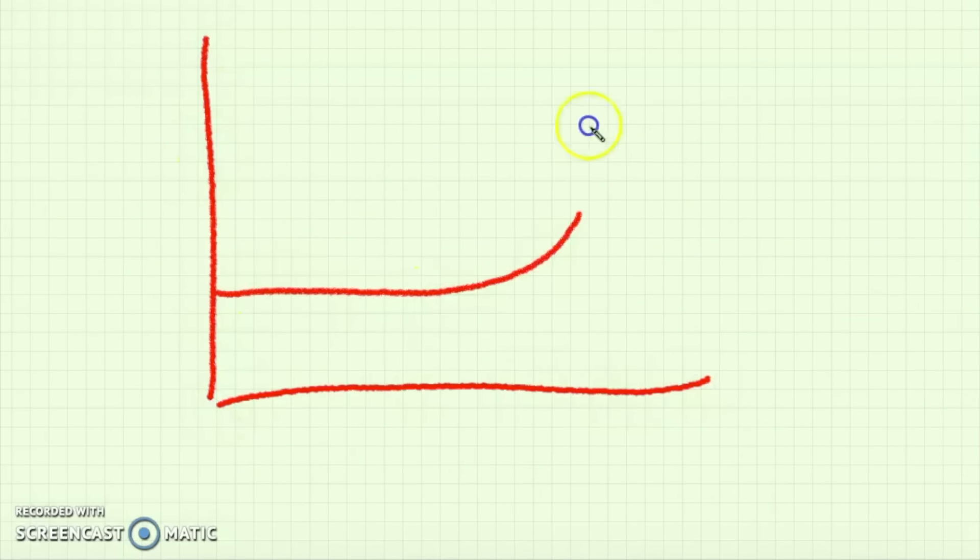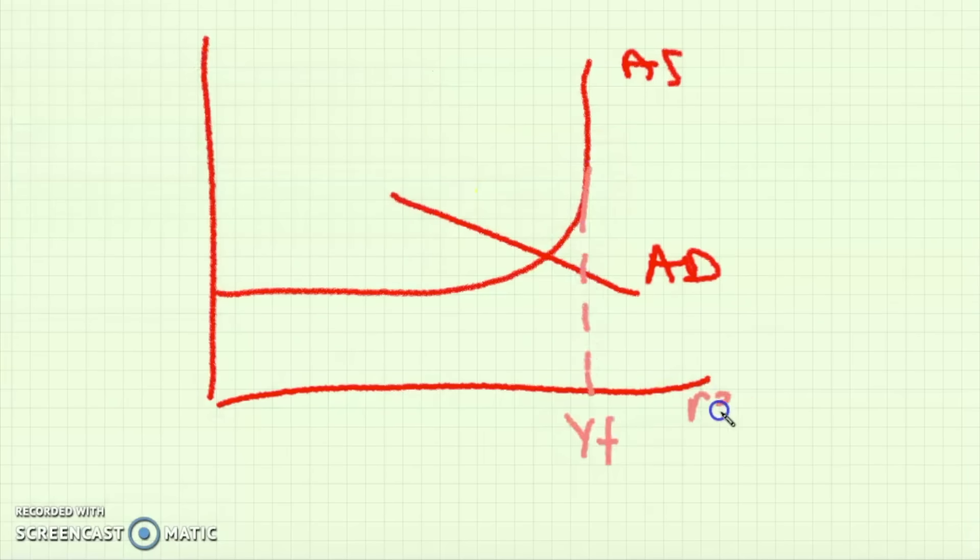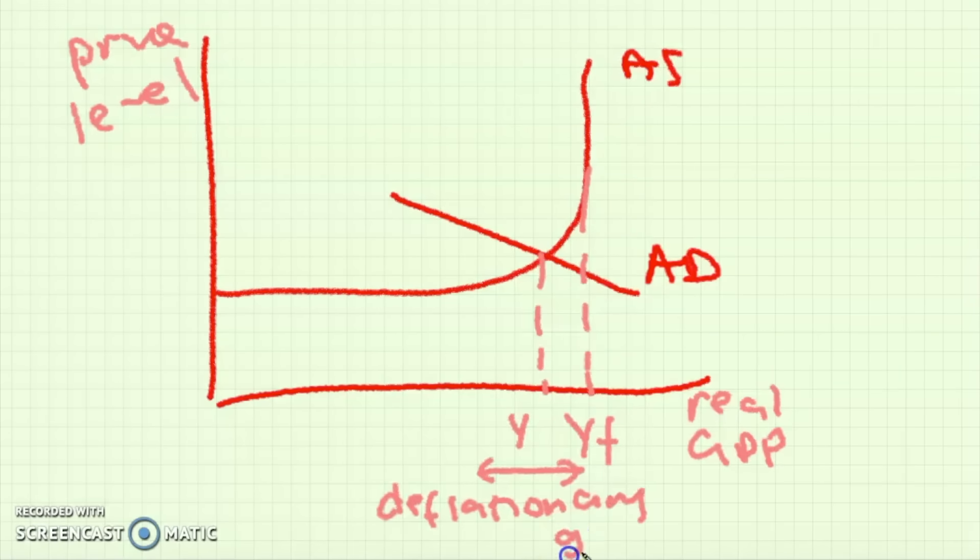For the Keynesian model however there is no difference between the short-run and the long-run. We only have one aggregate supply which is curved and AD. Here we also have a full employment level of output which is when AS becomes perfectly vertical. Here I'm showing you a deflationary gap because actual real GDP is below YF.